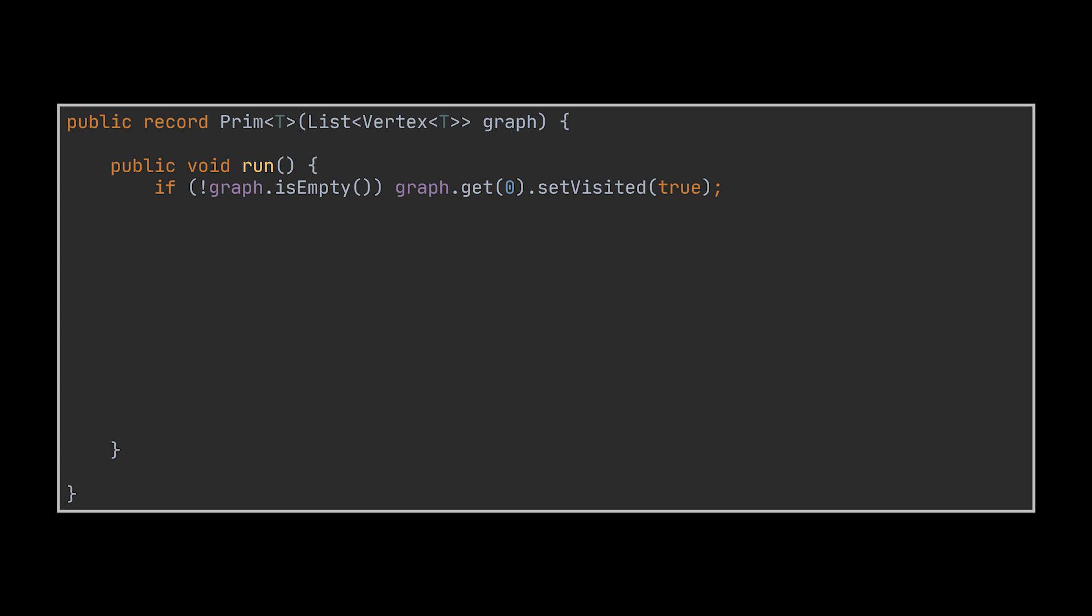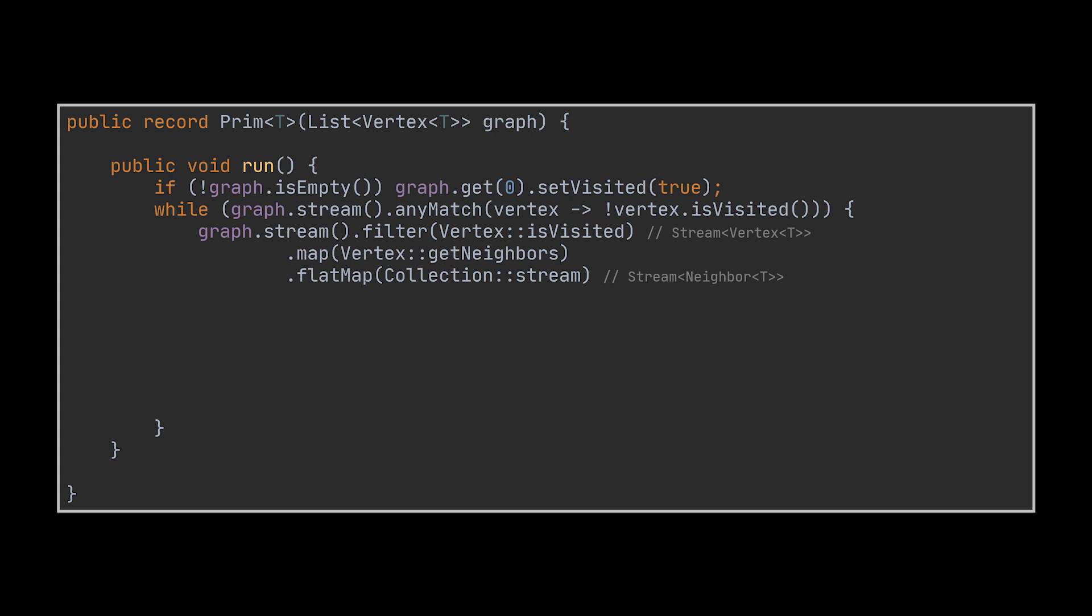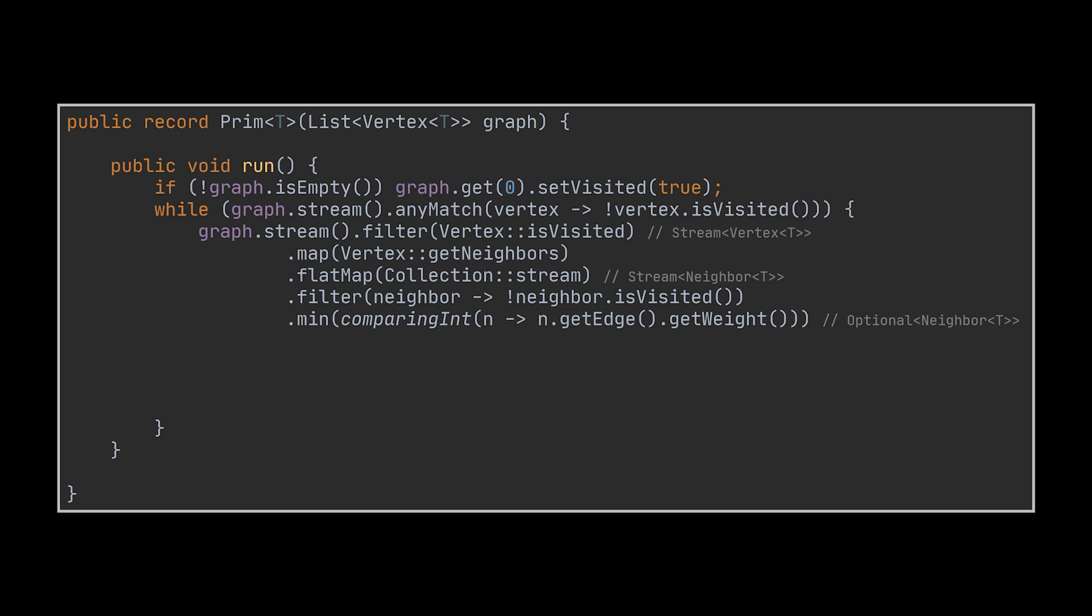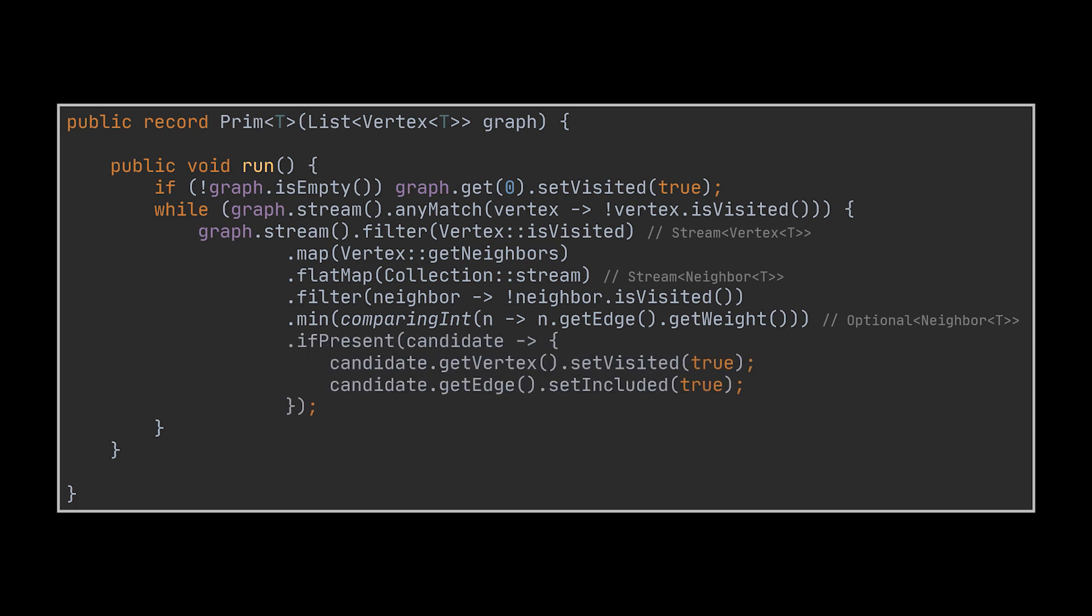Here we picked the very first vertex. Next, while we still haven't visited all of our vertices, so if at least one vertex in the graph is still not visited, we need to gather all of our visited vertices. Then see which pairs of edge vertex, or neighbors, are connected to these visited vertices. And among the unvisited or unincluded neighbors we gathered, we need to pick the one that has the minimum or lowest edge weight. That minimum neighbor is then added to the spanning tree we are generating by simply setting its vertex and edge to visited.